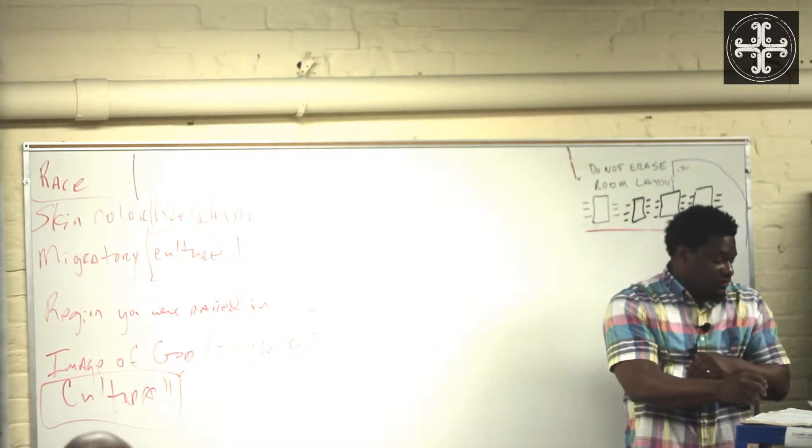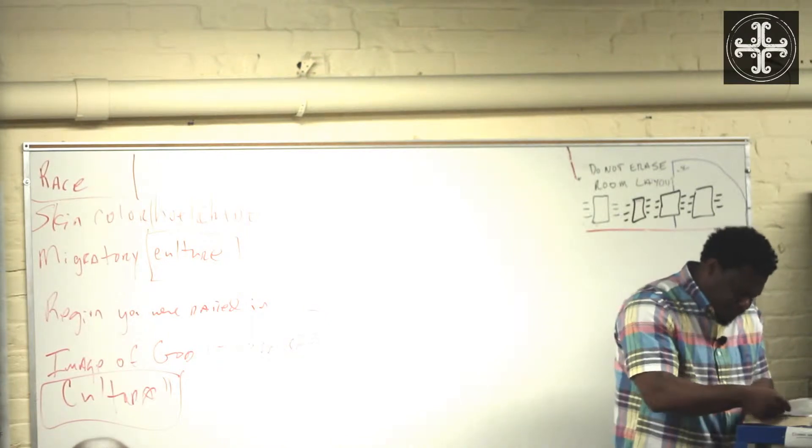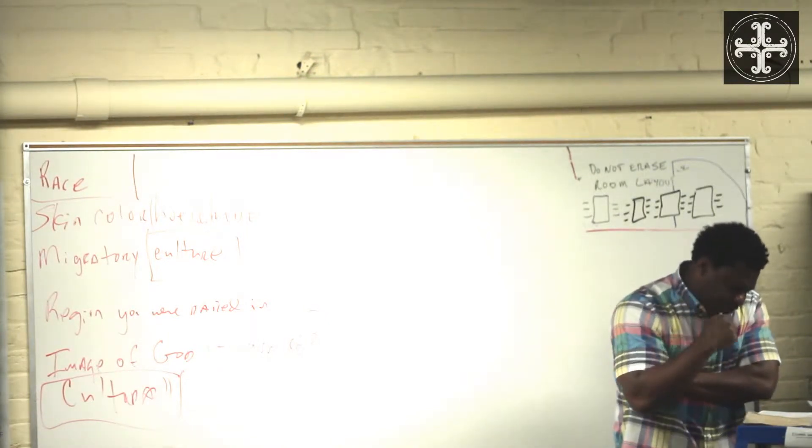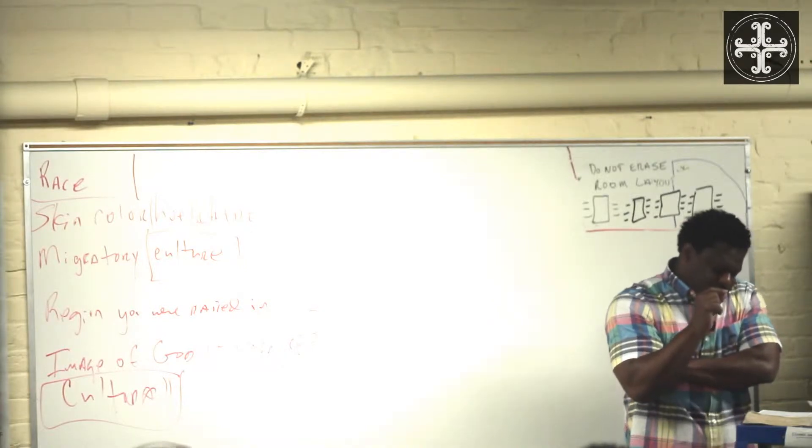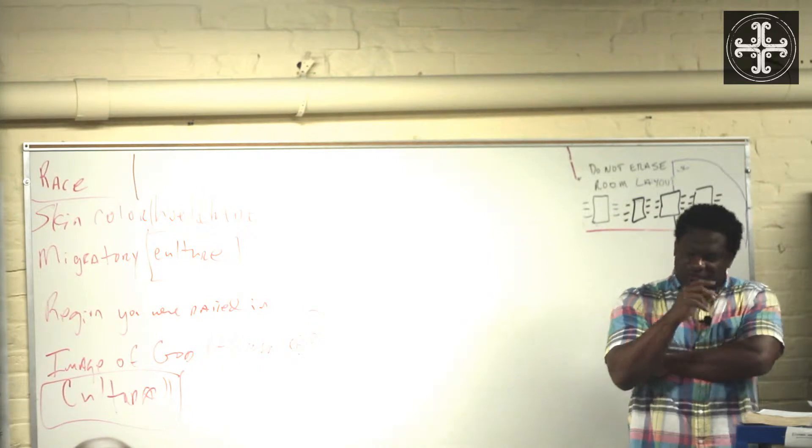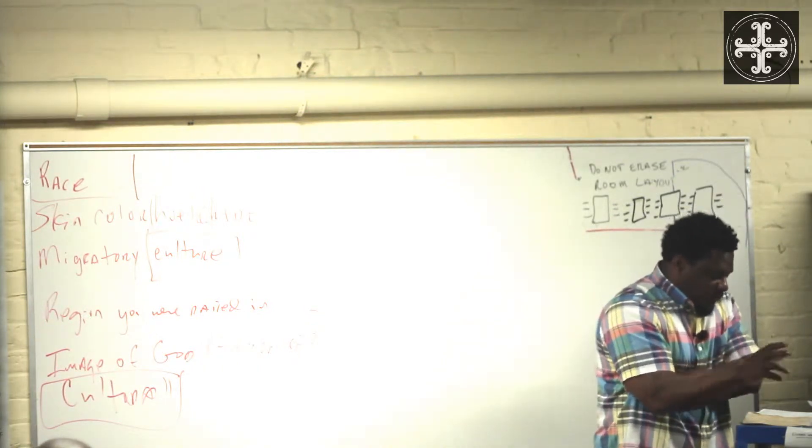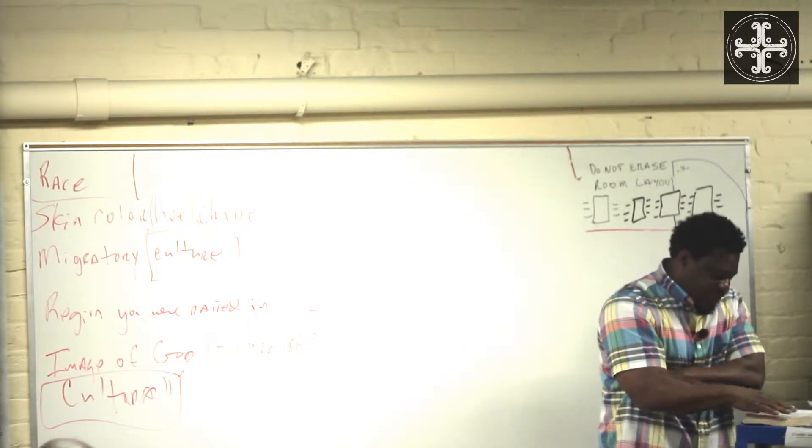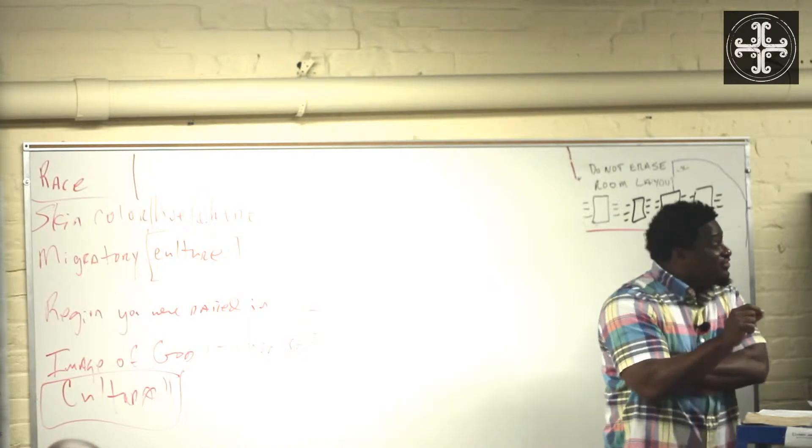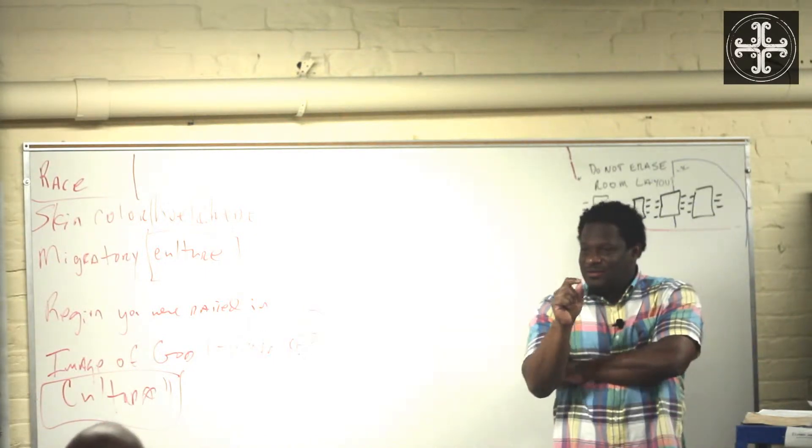Now if we go back to the Genesis passage, I want to show you something really interesting here. In verse 11 of Genesis, he's talking about the plants: let the earth sprout vegetation, plants yielding seed, and fruit trees bearing fruit in which is their seed, each according to its kind on the earth.